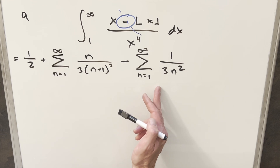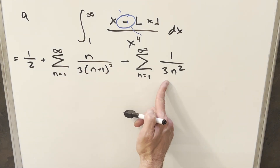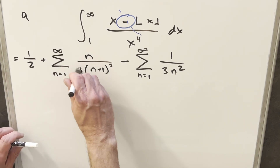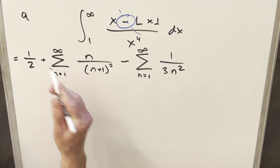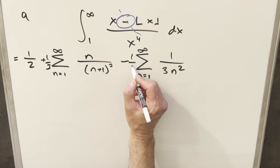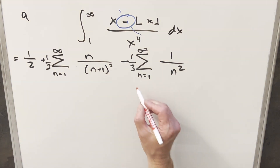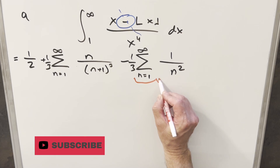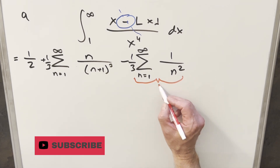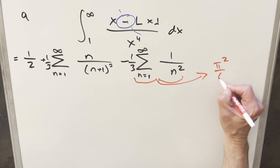On the rewrite, I broke this up into two sums. Both terms have a factor of one third, which I can bring outside the sum. At this point, you may recognize this value — this is the famous Basel problem. We know this sum equals pi squared over six.